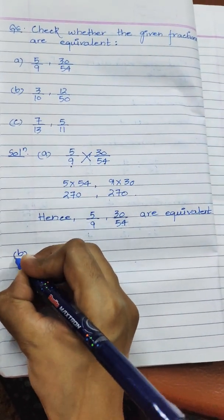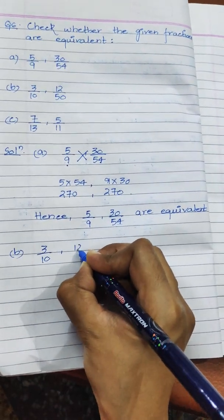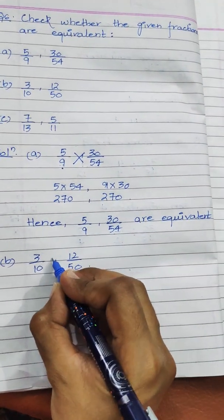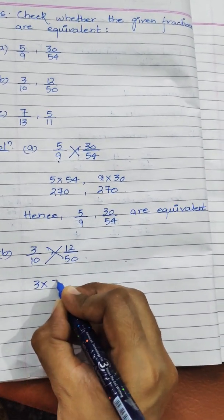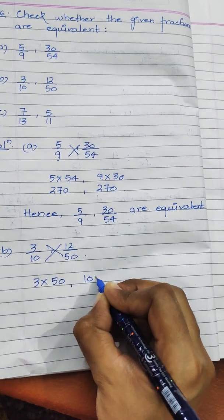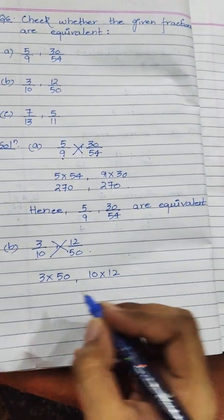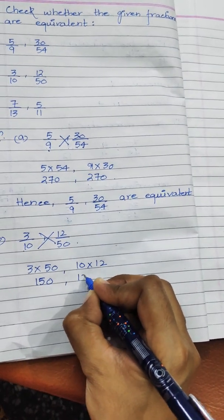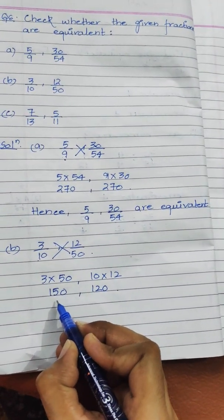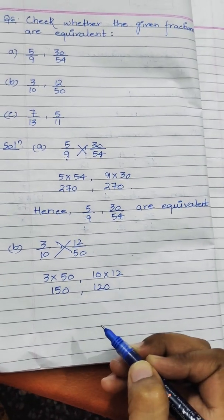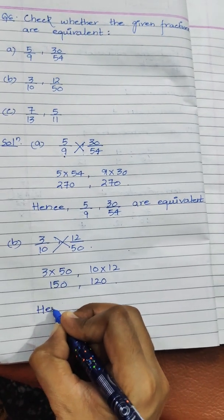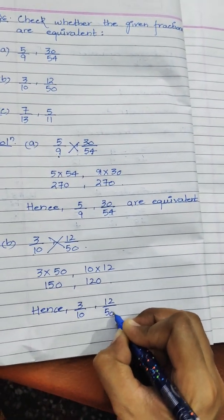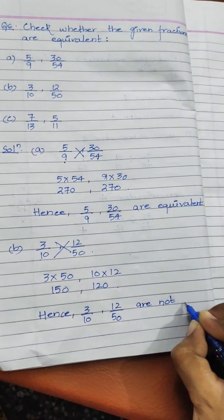Next, 3 upon 10 and 12 upon 50. We have to check whether they are equivalent, so again we do cross multiplication. 3 multiplied by 50 is 150, and 10 multiplied by 12 is 120. Since 150 and 120 are not equal, the fractions are not equivalent. Hence, 3 upon 10 and 12 upon 50 are not equivalent.